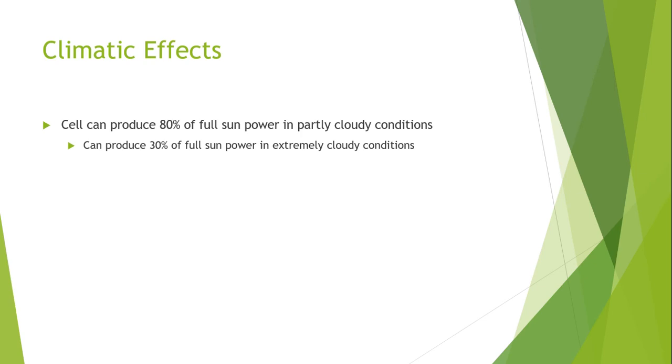Now I will discuss the climatic effects. The solar cells can produce 80 percent of the full sun power in partially cloudy conditions, and when the climatic conditions are extremely cloudy, the overall production can reduce up to 30 percent.